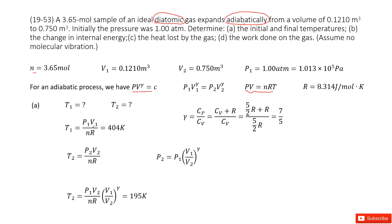For T2, we use the same strategy. T2 = P2·V2 / (n·R). V2 is given, n is given, R is a constant. But it looks like we need to find P2 first. How can we find P2?